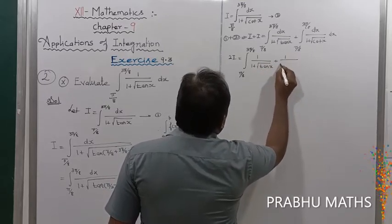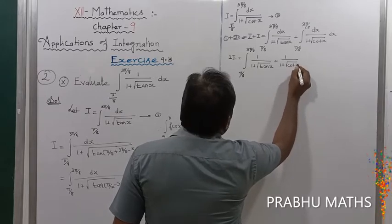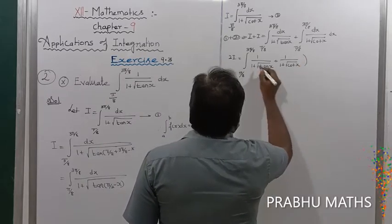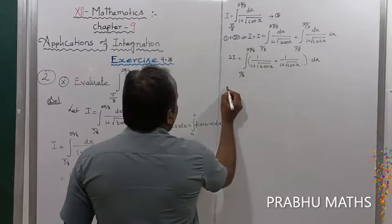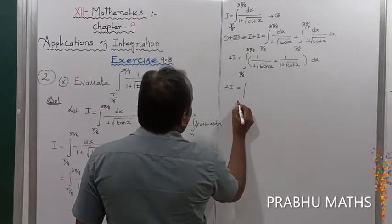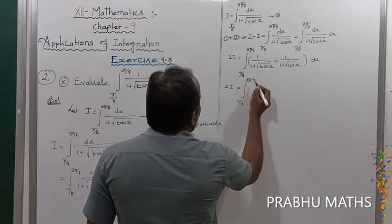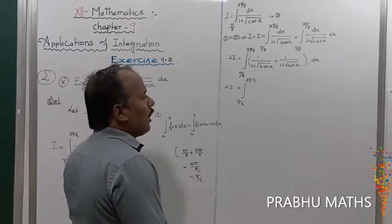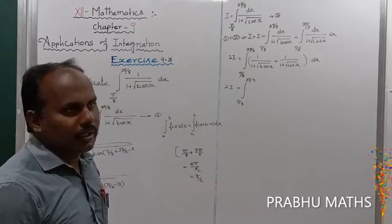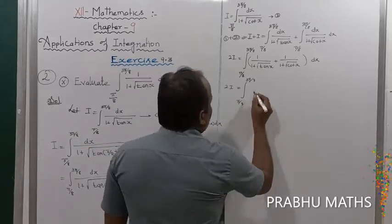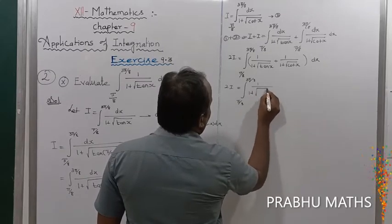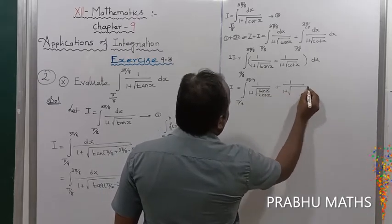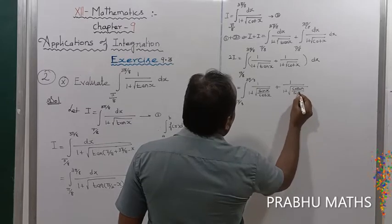Now converting using trigonometric identities: tan x equals sin x over cos x, and cot x equals cos x over sin x. So 2I equals integral from π/8 to 3π/8 of 1 divided by 1 plus root of (sin x over cos x), plus 1 divided by 1 plus root of (cos x over sin x), into dx.